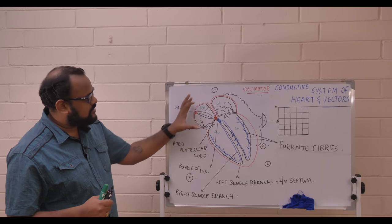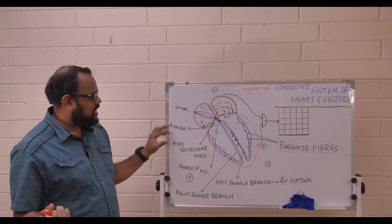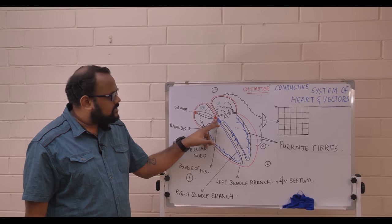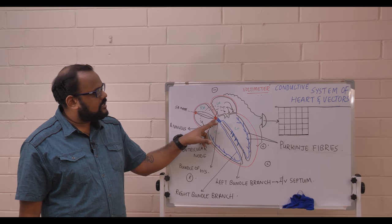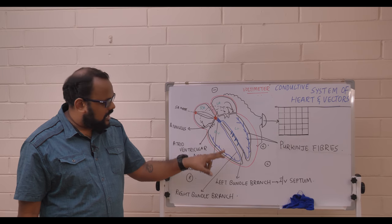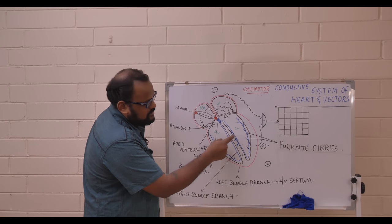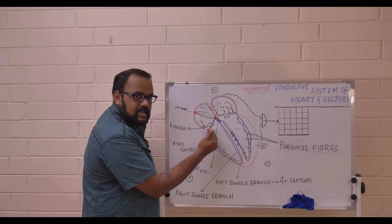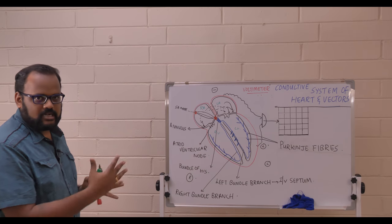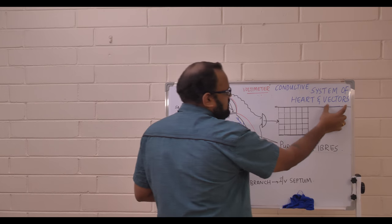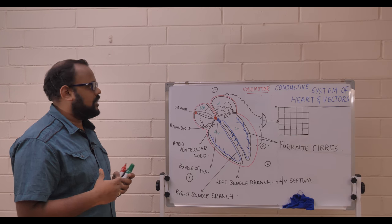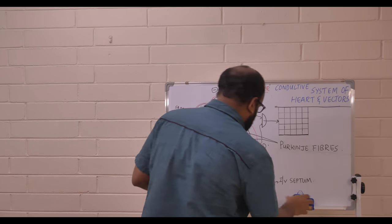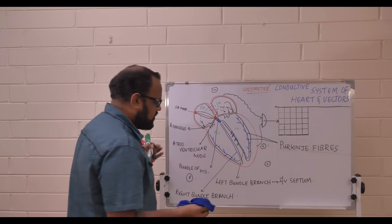To summarize the conduction system: the SA node fires impulses across the atrium; they bounce off the fibrous annulus; the only pathway to the ventricles is through the AV node, which acts as a gatekeeper; then impulses travel to the bundle of His, left and right bundle branches, and Purkinje fibers. The left bundle branch supplies the interventricular septum. Now let's talk about vectors — a concept involving some physics needed to understand ECG.